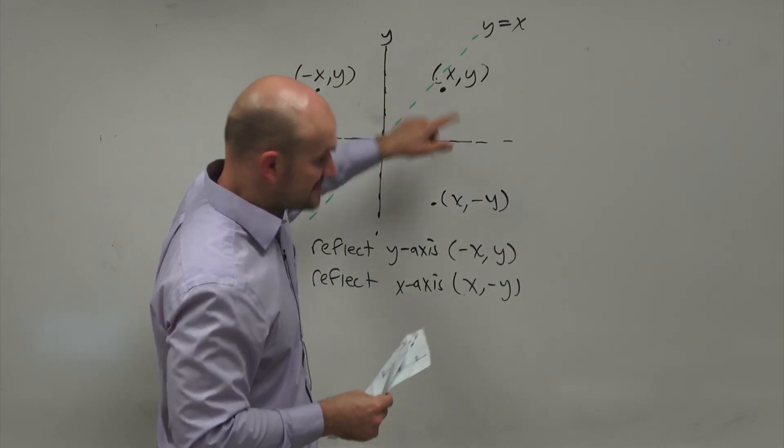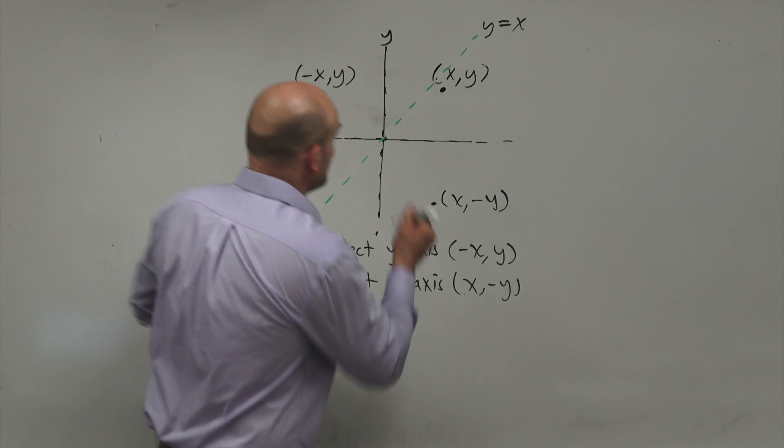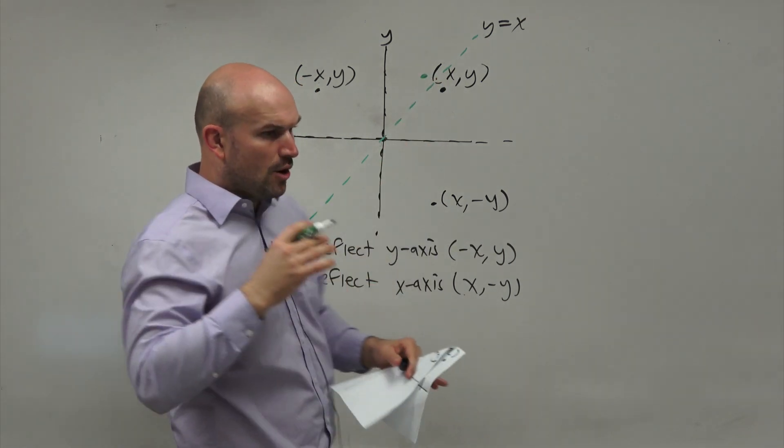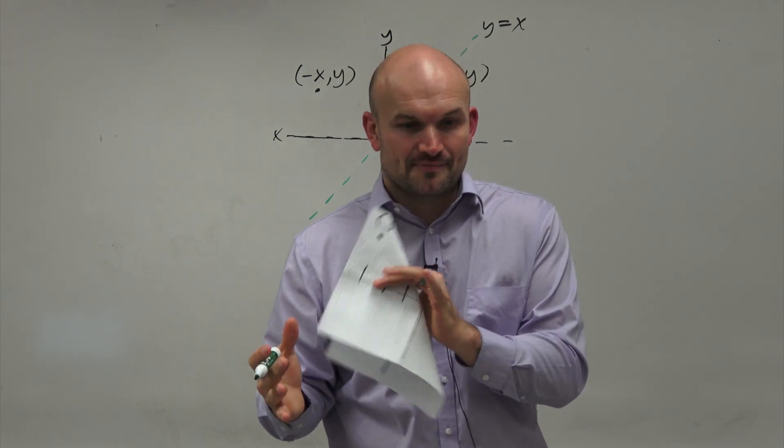So when you're going to do a reflection about the Y equals X line, again, think about it. If you're going to reflect about this line, it's just going to be right there. So what's happening then? How is it being moved?